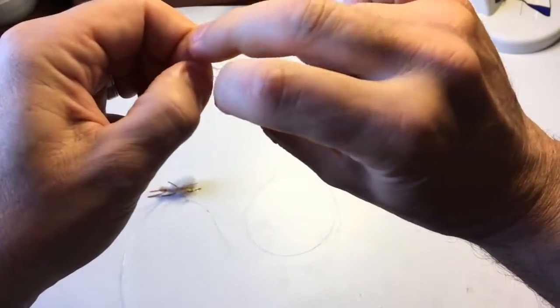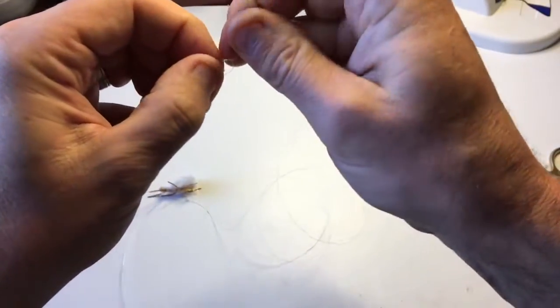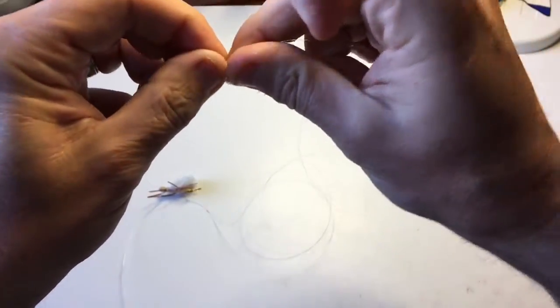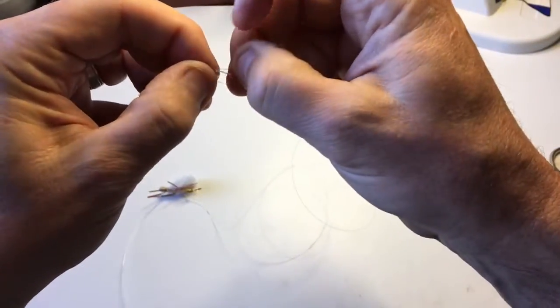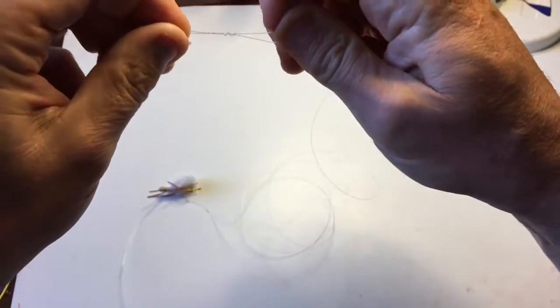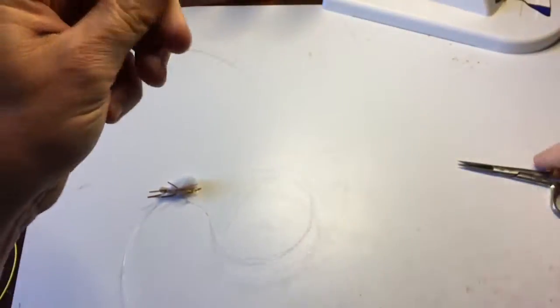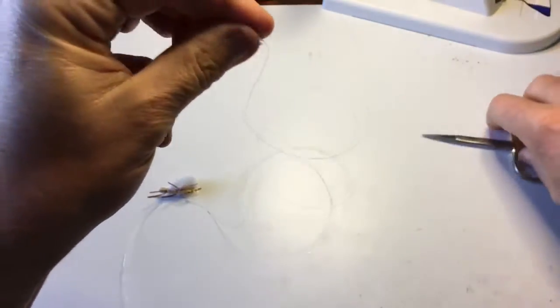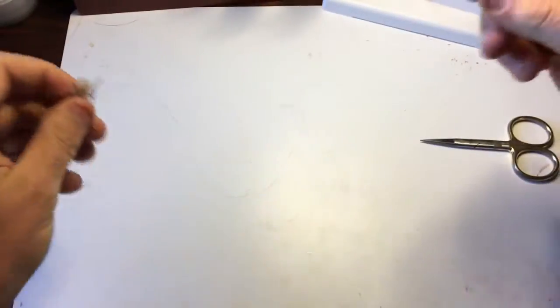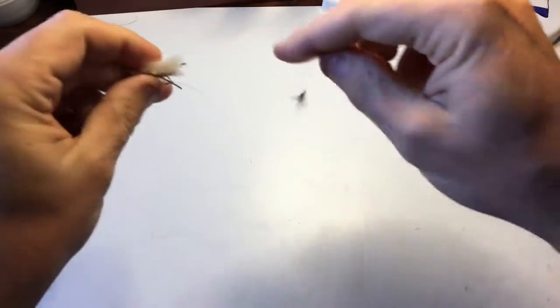This is one of my favorite ways to fish this dry dropper setup. It's a very effective technique for searching, looking for fish. Cut off the tag in there. And that's the dry dropper setup.